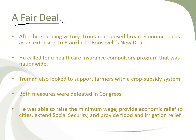Truman also looked to support farmers with a crop subsidy system. However, both the healthcare and farm support measures were defeated in Congress. A couple of things he was able to accomplish through the Fair Deal included raising the minimum wage, proposing economic relief to cities, extending Social Security, and providing flood and irrigation relief to parts of the country that needed it.